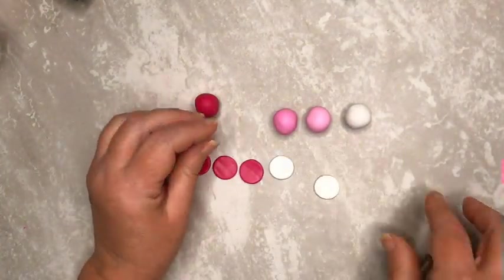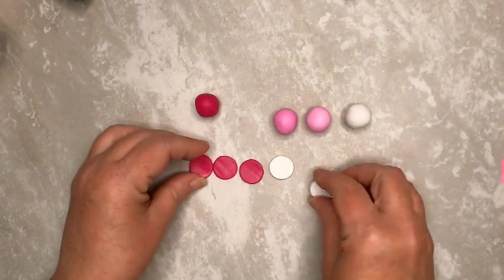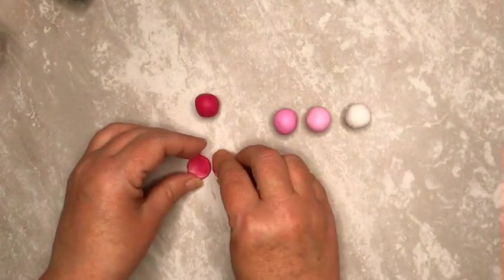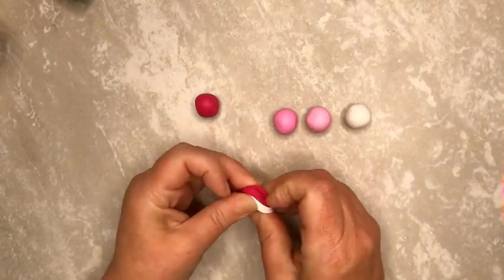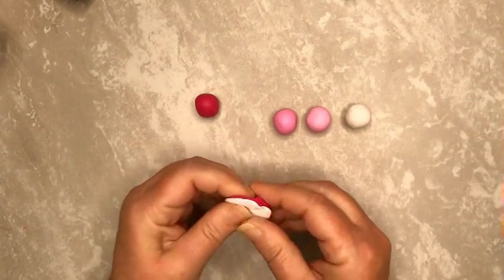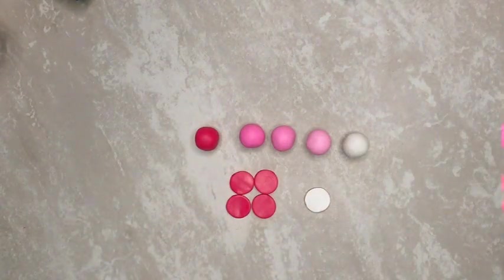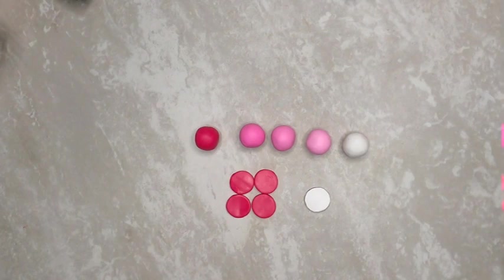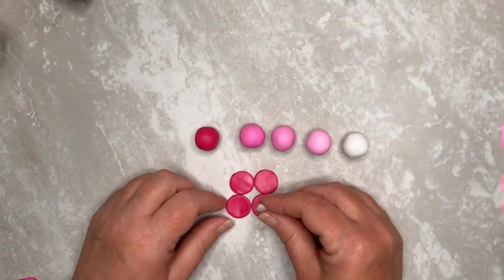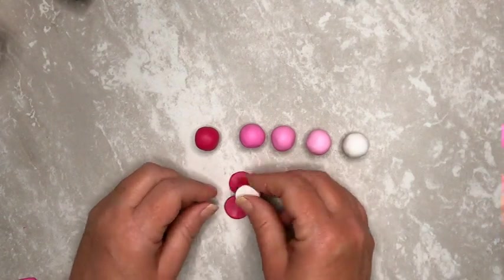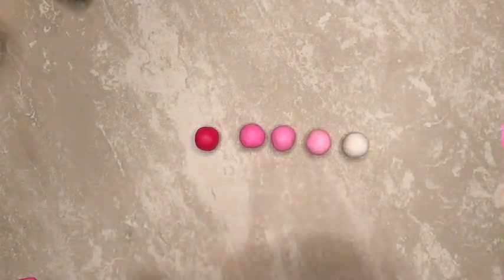Then mix two circles of white clay with three circles of fuchsia clay. This will create an even darker version of the fuchsia. Finally, mix just one circle of white clay with four circles of fuchsia clay. This will create an even darker version of the fuchsia.